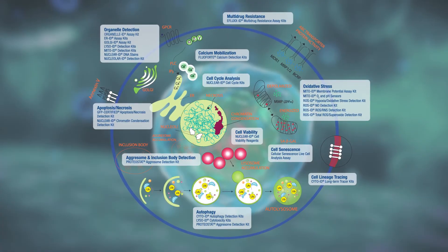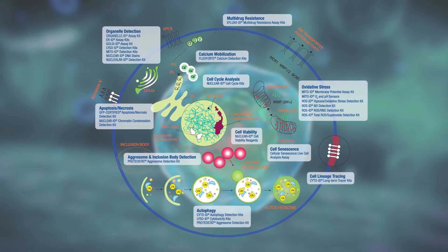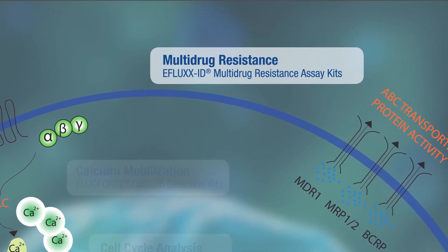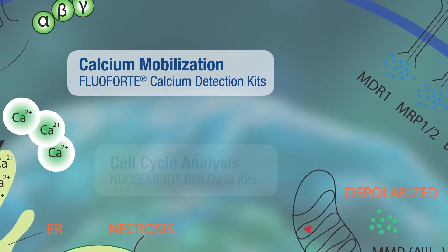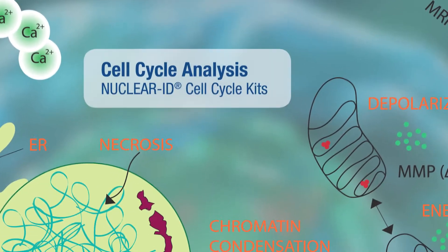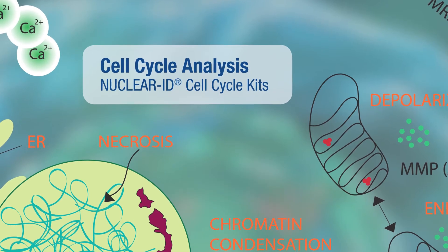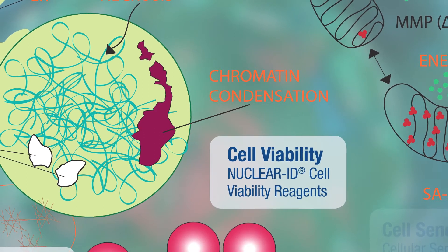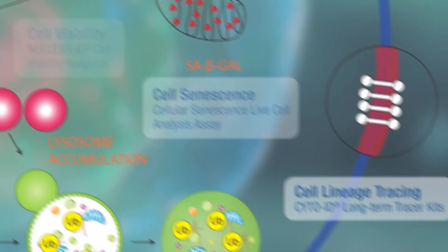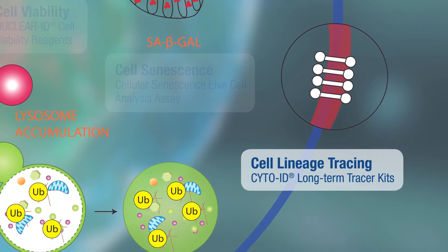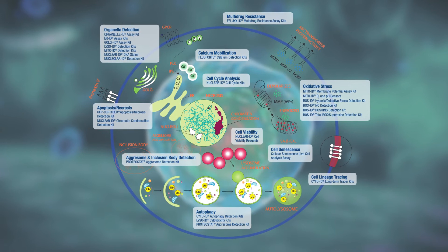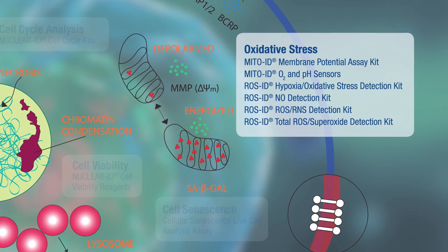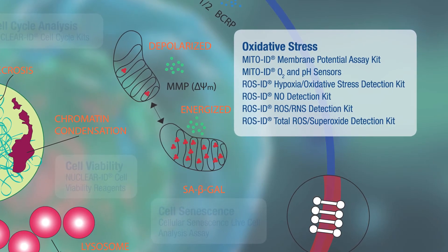Enzo's portfolio offers a wide range of kits. Measure multi-drug resistance activity for all three major ABC transporter proteins. Detect intracellular calcium mobilization. Study cell cycle progression by various applications in live, fixed, or permeabilized cells. Visualize live and dead cells. Quantify cellular senescence. And for longer-term studies, trace cell lineage without impacting cellular function. Enzo facilitates measurement of oxidative stress responses in real-time, monitoring accumulation of reactive oxygen species and compromised mitochondrial function.